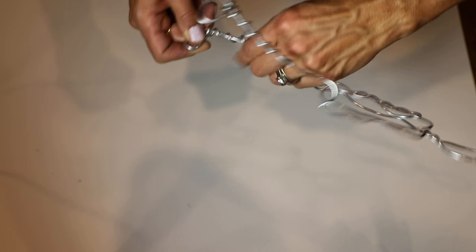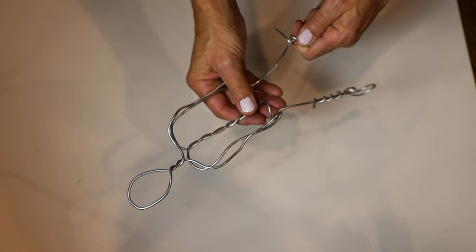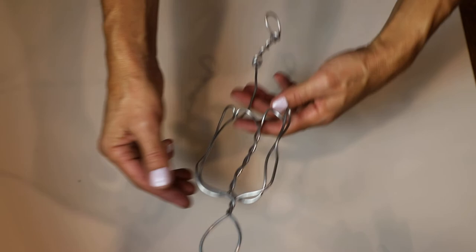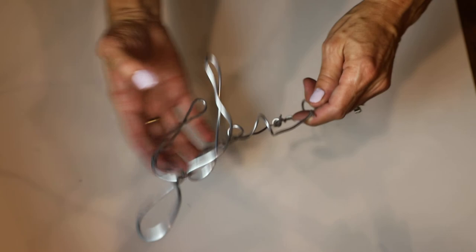So this is our armature, from the head, shoulders, arms, spine, hips, legs and feet. And then what we can do from here is manipulate and make this into a dynamic movement.